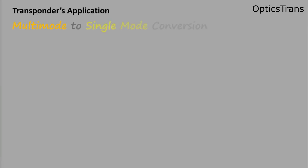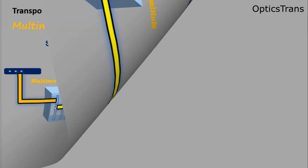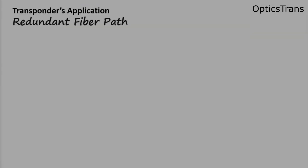There are other applications where transponders are used. They are used for multimode to single mode conversion. As we know, multimode fiber optic cables are often used in short distance transmission. Transponders can convert signals from multimode to single mode fiber to extend the signal reach.